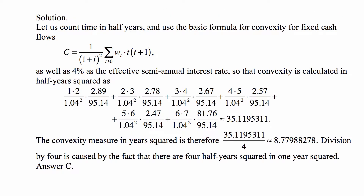We're going to count time in half-years and use the basic formula for convexity for fixed cash flows, which is 1 over (1 plus i) squared times the weighted average of t times (t plus 1), where the weights are market-value based. We use i = 4% per half-year, so the convexity answer will be in half-year squared units.